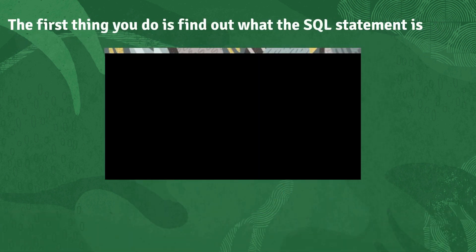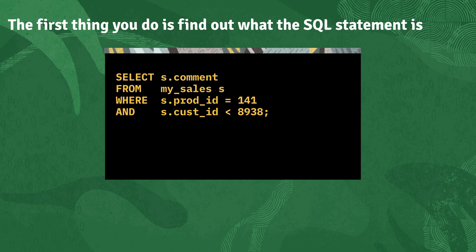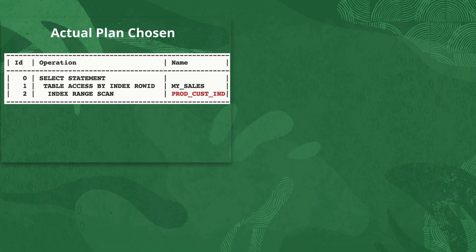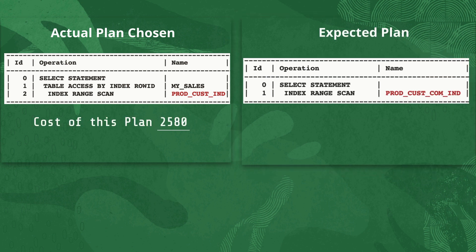First thing you're going to want to do is check out the SQL statement in question. When we do that, we find it's a simple SQL statement accessing just one table, my sales, with two where clause predicates — one on the product ID and one on the customer ID. Let's take a look at the execution plan. The plan we're getting by default is an index range scan followed by a table accessed by row ID, and the cost of that plan is about $2,500. The execution plan everybody was expecting is an index range scan without any access to the table, but that plan by default has a cost of nearly 10,000.